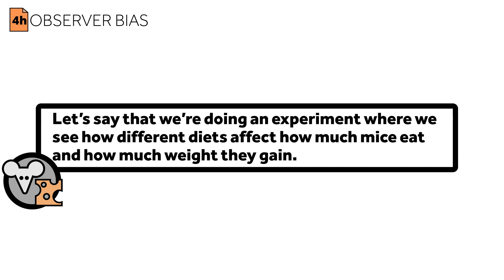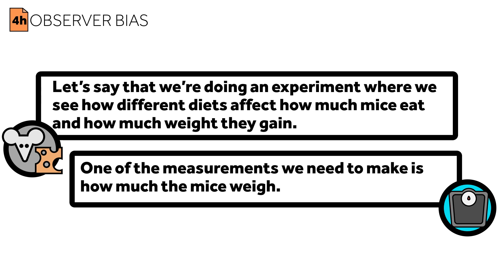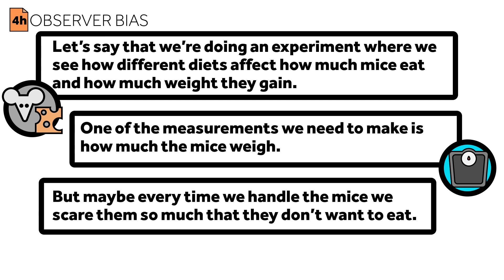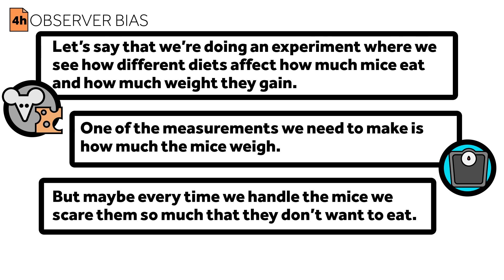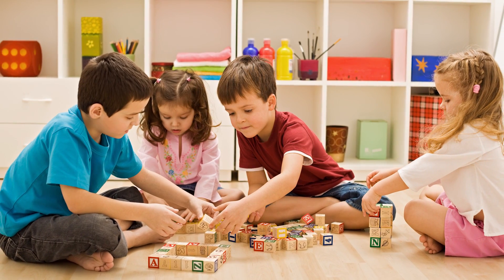Let's say we're doing an experiment where we want to see how different diets affect how much mice eat and how much weight they gain. One of the measurements we need to make is how much the mice weigh, but maybe each time we handle the mice, we scare them so much that they don't want to eat. We might think that the diet is working, but instead it's our measurement that's making a difference.